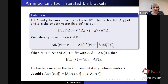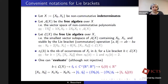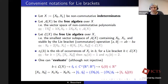The Lie bracket measures the lack of commutativity between motions. It will be very convenient to have some notation. The goal of this slide is to introduce these notations and I will use them massively in the rest of the talk, so it's important that you memorize them.